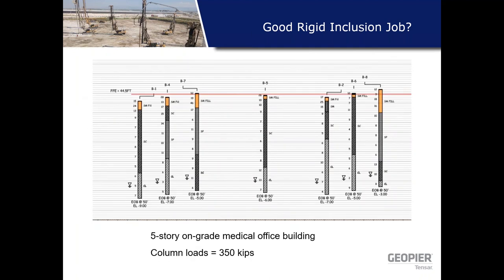Example two: a project in Maryland — a five-story medical office building with modest column loads of 350 kips. In the coastal plain geology there's engineered fill without compaction records, sandy clay sands, and loose clay sands underlain by stiff to medium-stiff clays. Extending a rigid inclusion through those sands and tagging the clays may not make sense — not sure how much capacity you'd get, and why go through sands that aren't that bad with loads that aren't that high? Better to just improve these alluvial deposits with rammed aggregate piers. Rigid inclusions don't make sense here — soils aren't that bad.